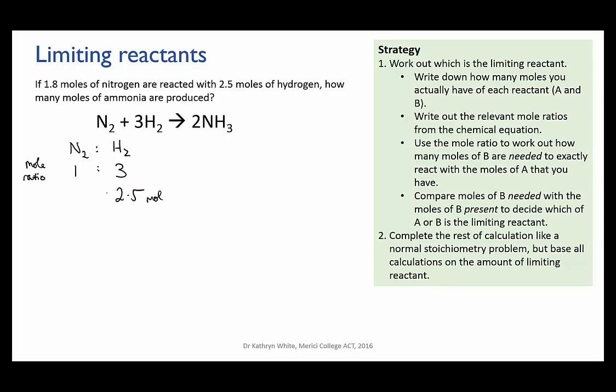Now the mole ratio is 3 hydrogens to 1 nitrogen so to work out how much nitrogen is needed to fully react with that amount of hydrogen I have to divide by 3. So that's 2.5 divided by 3 which equals 0.83 moles of nitrogen.